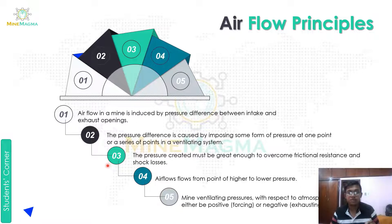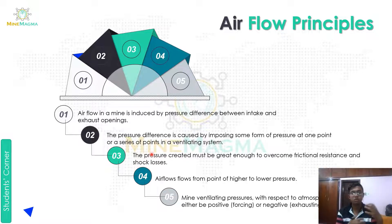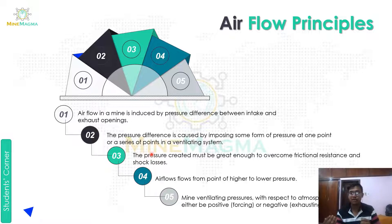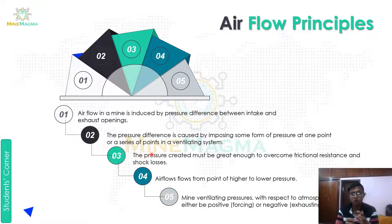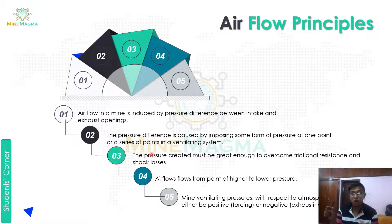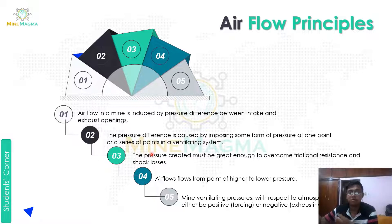Third principle: the pressure created must be great enough to overcome frictional resistance and shock losses. Obviously, due to irregular surfaces aur alag-alag reasons ki wajah se, jo bhi pressure hum ek jagah se bhejte hain woh friction resistance aur shock loss ki wajah se utna nahi pohunchta jitna chahiye. Isliye hum itna amount of pressure create karte hain jo in losses ko bhi cover kare aur sahi amount us place pe mile.